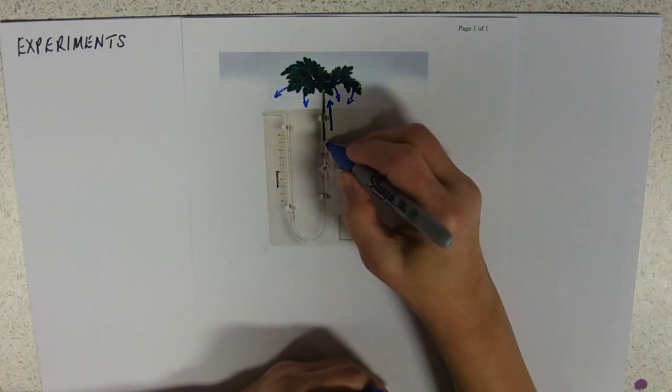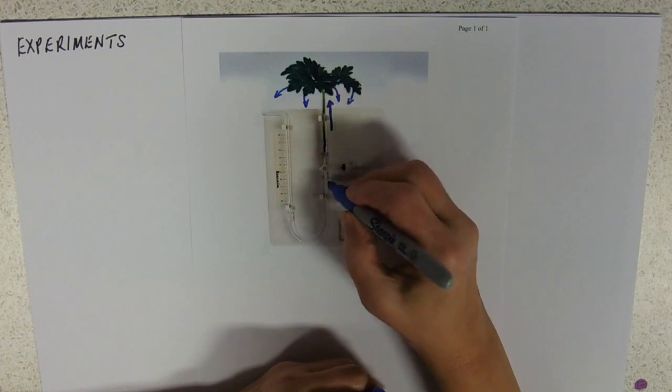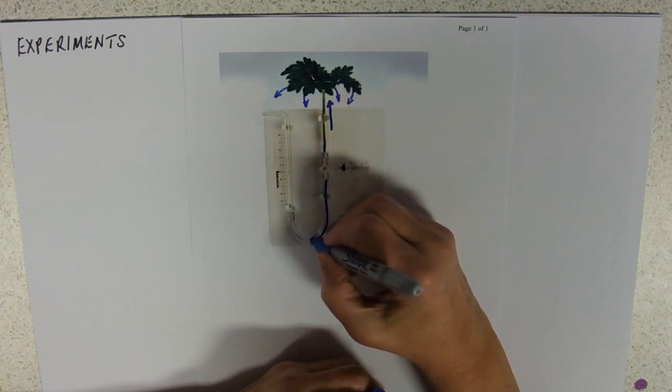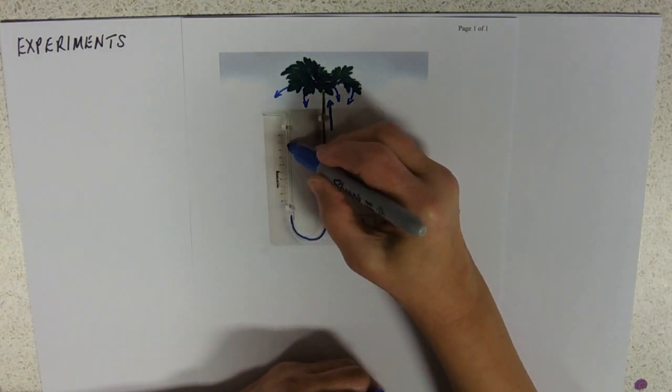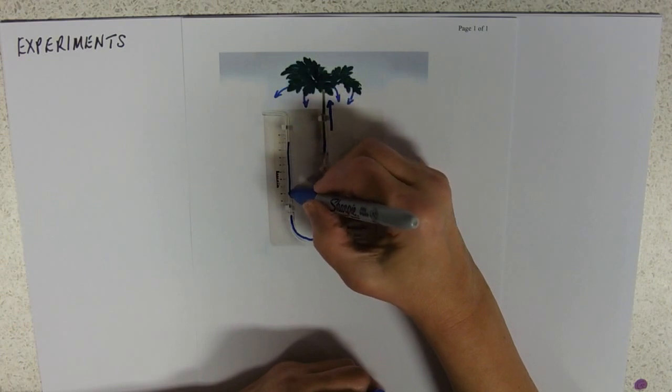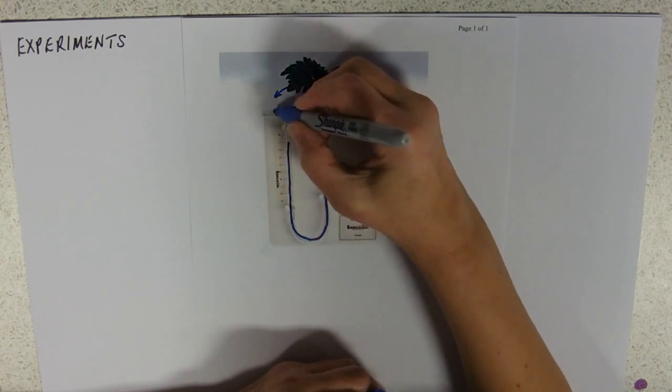And it's therefore pulling water up its stem. The idea is, I'll just colour the water in, that all of this equipment, all the way down, is full of water.